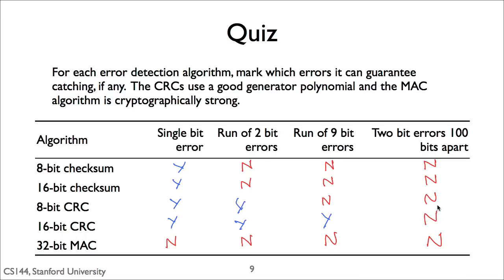How about 2-bit errors 100 bits apart? It turns out none of these algorithms can guarantee detecting this error, so no for all of them. Looking at this matrix, you might think error detection is a waste — the algorithms promise very little. But 'guarantee' is a very strong statement. While an 8-bit checksum can't guarantee it will catch a run of 9-bit errors, there's a high probability it will. Similarly, a 16-bit CRC has a very high probability of detecting 2-bit errors 100 bits apart. And in practice, high probability is often good enough. If failures are rare, then you only sometimes have to do something more expensive to recover. In practice you tend to have multiple layers of error detection: the link layer detects them with CRCs, IP detects them with checksums, TCP detects them with checksums, and then often the application has its own error detection. All put together, the chances of errors creeping through is very, very low.